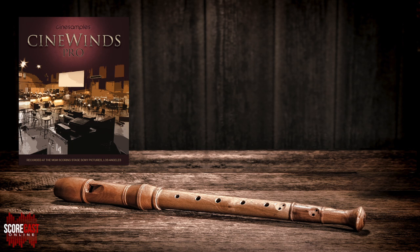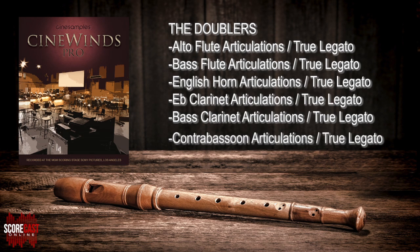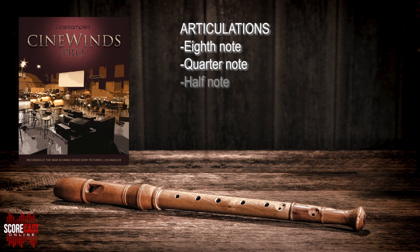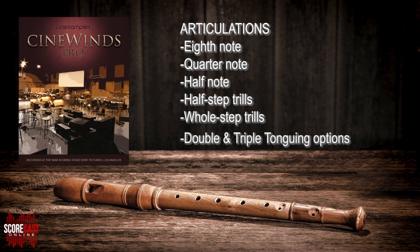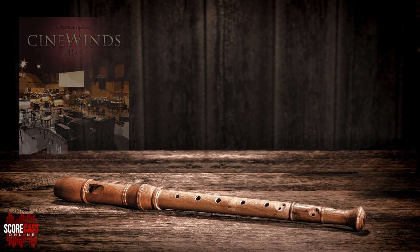Here's a list of the instruments included with the doubler section. You'll see that each instrument includes an articulation and a true legato patch. The articulation patches all contain eighth, quarter, and half-note shorts, but also include options for half and whole-step trills. A very cool extra feature with the articulation patches is the double and triple tonguing option, which allows composers to easily play quick short repetitions.